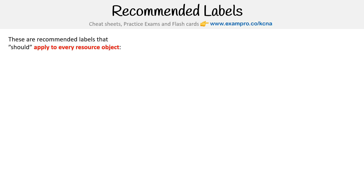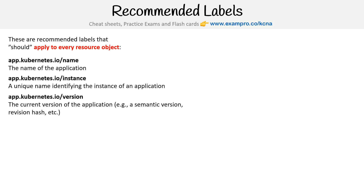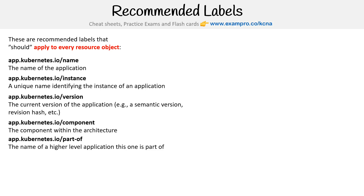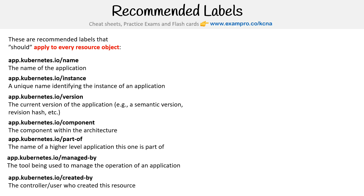Let's take a look at recommended labels. These are recommended labels that should be applied to every single resource or resource object. I say 'should' in parentheses because in practicality, most people aren't doing this. So let's take a look at what is recommended: we have name, instance, version, component, part-of, managed-by, created-by — they're self-explanatory.